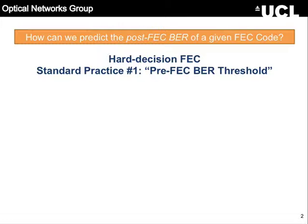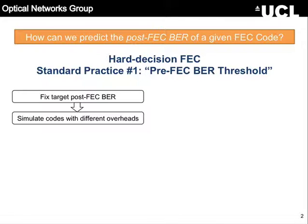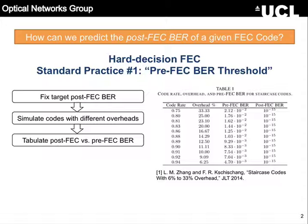The way this is usually done — what I call standard practice number one — is to use the pre-FEC BER threshold. The way this works is as follows: you say after your decoder you want to have a bitrate of say 10 to the minus 15, so you fix your post-FEC BR to your target level. Then you simulate a family of codes and make a table, where you say you have different code rates or different overheads, and for a given code rate you say to achieve 10 to the minus 15 after the coding, a pre-FEC BR of 1.44 in this case is enough. You have an input-output relationship: post-FEC BR characterized by pre-FEC BR.